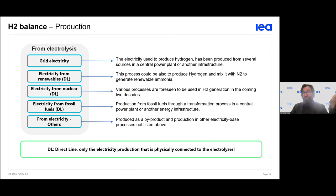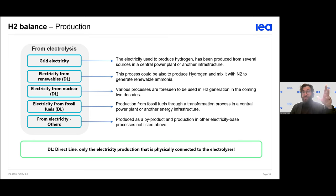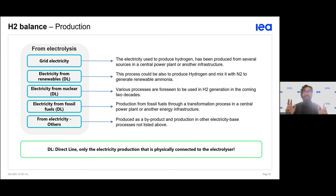Hydrogen can also be produced through electrolysis. To simplify: water is passed through a specific membrane to ionize the water, which then produces hydrogen and oxygen. This is a very simplified explanation. This process can be called clean hydrogen production, because the hydrogen produced can be used for power generation and storage.